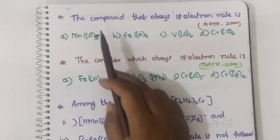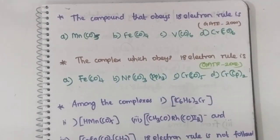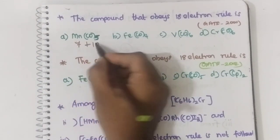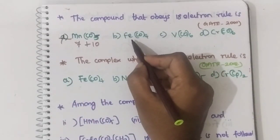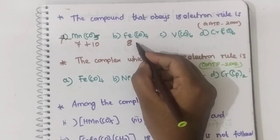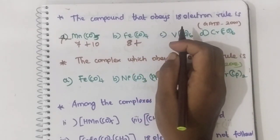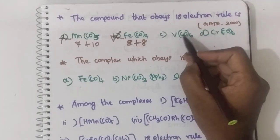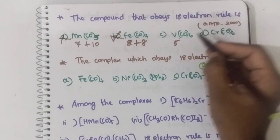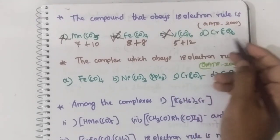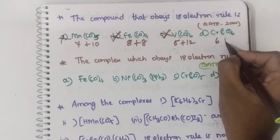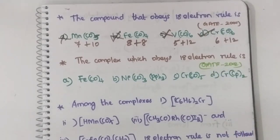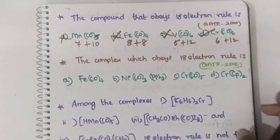Third question: which compound obeys the 18 electron rule? Mn(CO)5: 7 + 10 = 17 — not the option. Fe(CO)4: 8 + 8 = 16 — not the option. Mn(η5-Cp)(CO): 5 + 7 + 5 = 17 — not the option. Cr(CO)6: chromium has 6 valence electrons and 6 carbonyls donate 12. Total: 6 + 12 = 18. Hence Cr(CO)6 is the correct option. This question has been asked in GATE.